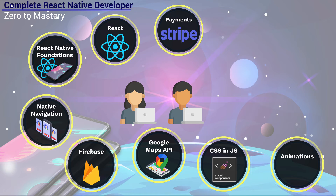Finally, you also get to learn about animations. Mobile apps are interactive and you need to have good user experience. We're going to use a very popular library by Airbnb called Lottie to learn about animations and how we can add them to our app.